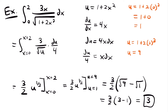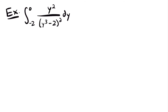Let's look at one more example. We have the integral from negative 2 to 0 of y squared divided by the quantity y cubed minus 2, squared. We could set u equal to y squared or y cubed minus 2. But taking the derivative of y cubed minus 2 gives a squared function, and we can see y squared in the integral. Also, y cubed minus 2 is a function inside a composite function. So we set u equal to y cubed minus 2.